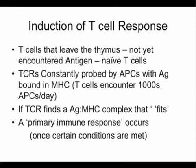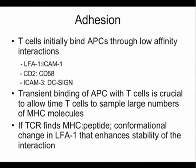These naive T cells home to secondary lymphoid tissues like the lymph node or the spleen — this is really where naive T cells live. These T cells are constantly interacting with antigen presenting cells. A T cell can see thousands of different antigen presenting cells a day, each with a different MHC and a different peptide on their surface. If a TCR finds an antigen-MHC complex that fits, then what's called the primary immune response occurs, once certain conditions are met.